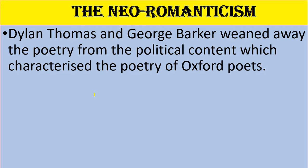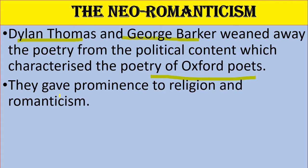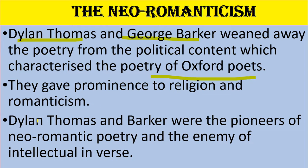First, we have to see the Neo-Romanticism movement. In this Neo-Romanticism, Dylan Thomas and George Barker moved poetry away from the political content which characterized the poetry of the Oxford poets. These two — Dylan Thomas and George Barker — are very important figures of this Neo-Romanticism movement. They gave prominence to religious themes and romanticism. Dylan Thomas and Barker were the pioneers of Neo-Romanticism poetry and the enemy of intellectual verse.